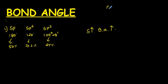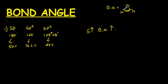First of all, let us understand what we mean by bond angle. We will discuss it on the basis of water. The angle between bonding electron pairs around the central atom is considered as the bond angle — that is what we call the bond angle.